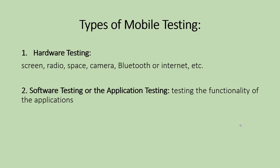There are two types of mobile testing. One is hardware testing and the other is software testing. Hardware testing covers the physical functionalities of the mobile device — things like the hand screen, camera, Bluetooth, etc. Software testing is about a particular app and its functionality. For example, if we make a WhatsApp function, we can test all the functionalities of WhatsApp — the user flow should be tested.